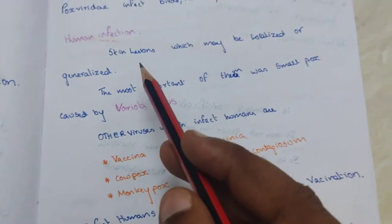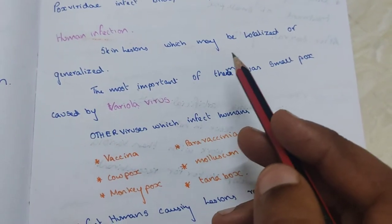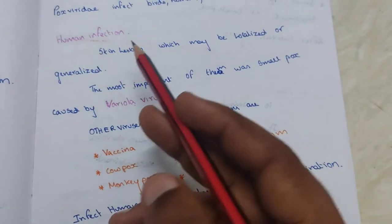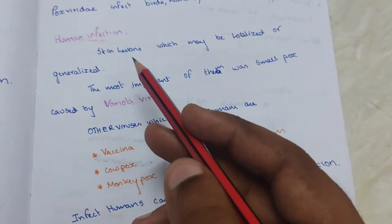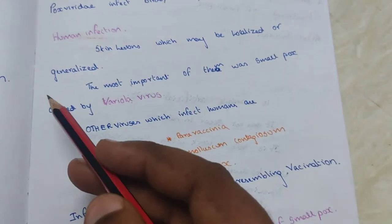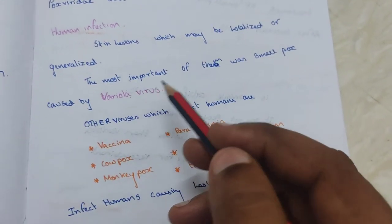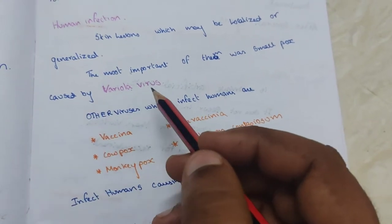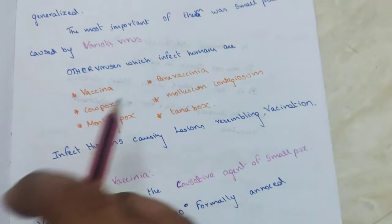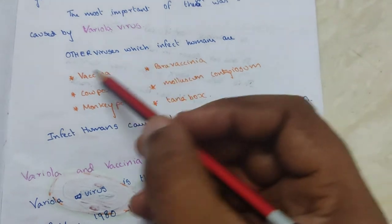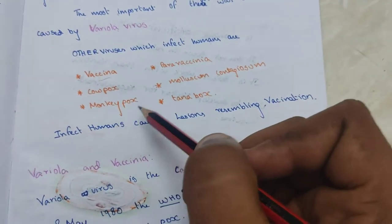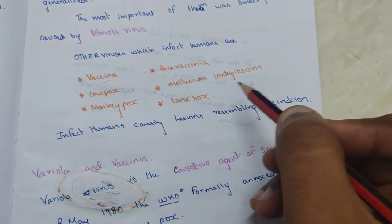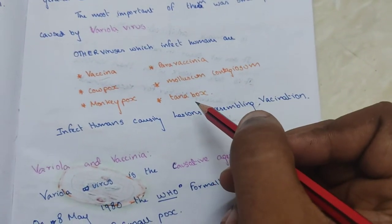Human infection causes skin lesions which may be localized or generalized. The most important of them was smallpox, caused by the variola virus. Other viruses which infect humans are vaccinia, cowpox, monkeypox, paravaccinia, molluscum contagiosum, and tanapox.